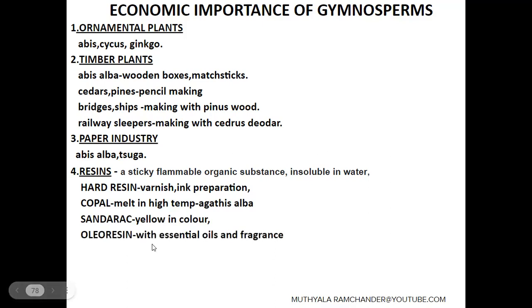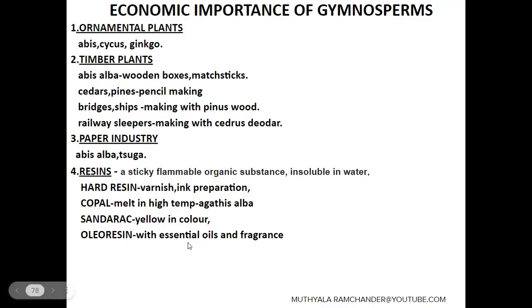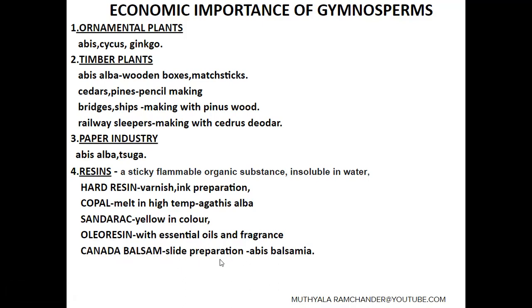Oleo resins contain oils, essential oils, and fragrance. They are mainly used for the making of perfumes. The next resin is Canada balsam. Canada balsam is mainly used for the preparation of permanent slides in the biological field. It is collected from Abies balsamea, which is a gymnosperm plant.